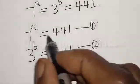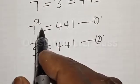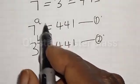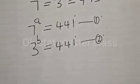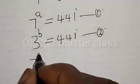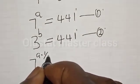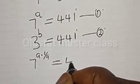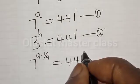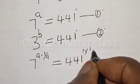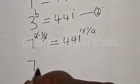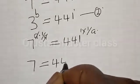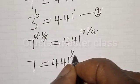Now, from equation 1, let's multiply the exponent by 1 divided by A. That is, 7 raised to power A multiplied by 1 over A is equal to 441 raised to power 1 multiplied by 1 divided by A. Then we have 7 is equal to 441 raised to power 1 over A.